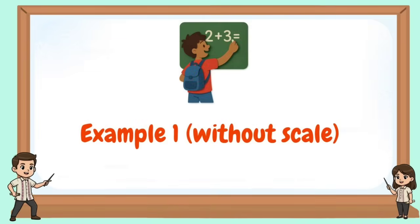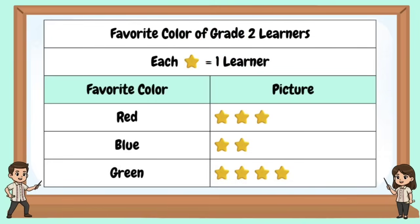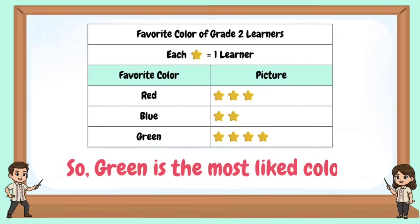Example 1, without a scale: Favorite color of Grade 2 learners. Red has three stars. Blue has two. And green has four. So green is the most liked color.